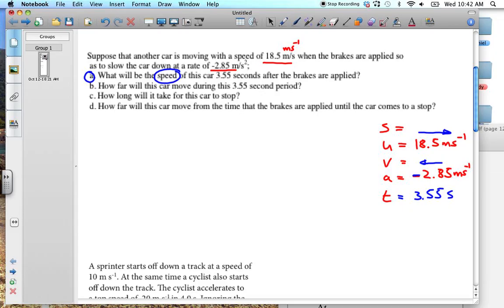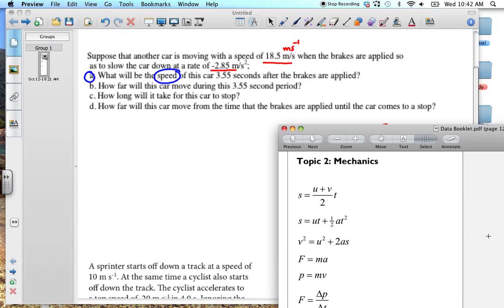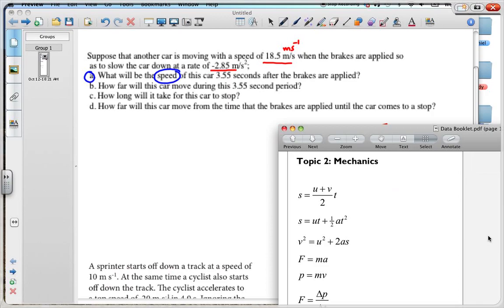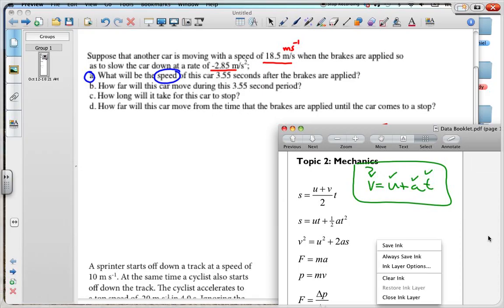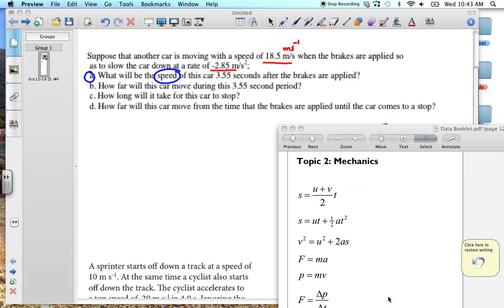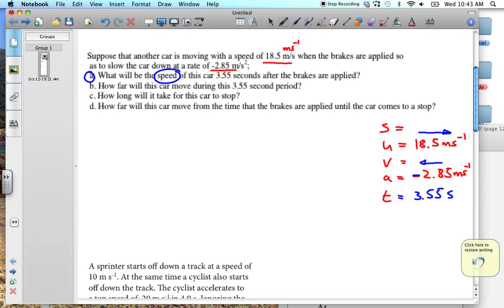Which formula are we going to use? We can bring up our formulas again. Remember, we've also got V is equal to U plus AT, and that would probably be a good one, because we want to find out what our V is. We've got our U, we've got our A, and we've got our T. So this would be a good formula to use.